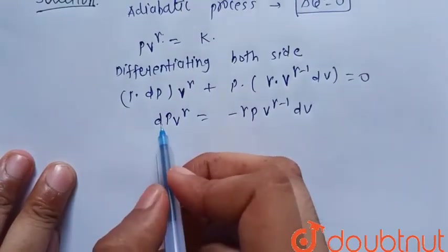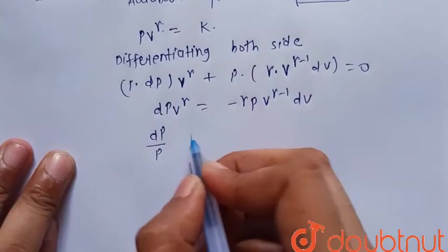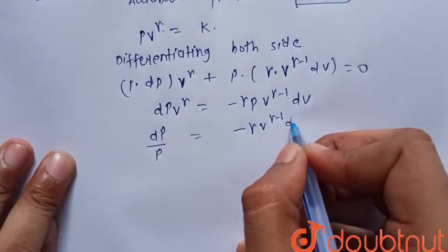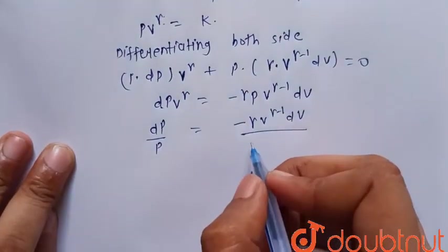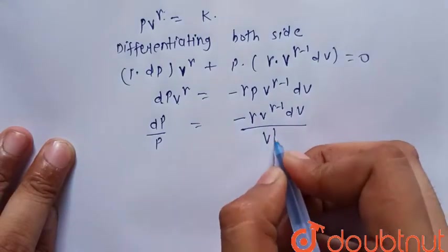Since we have to find dP upon P, so dP upon P is equal to minus gamma V to the power gamma minus one dV upon V to the power gamma.